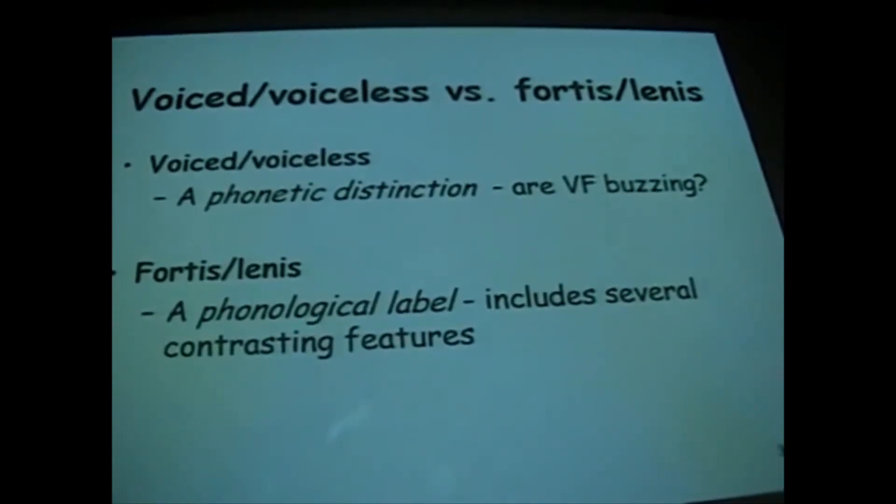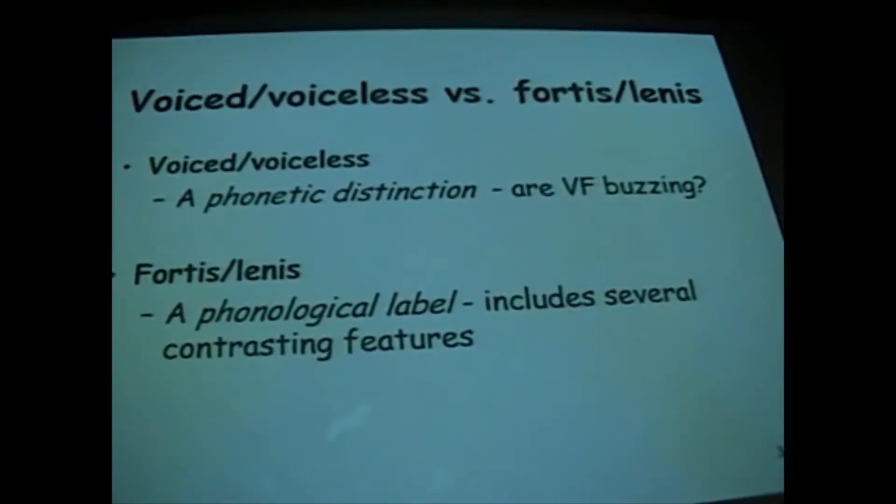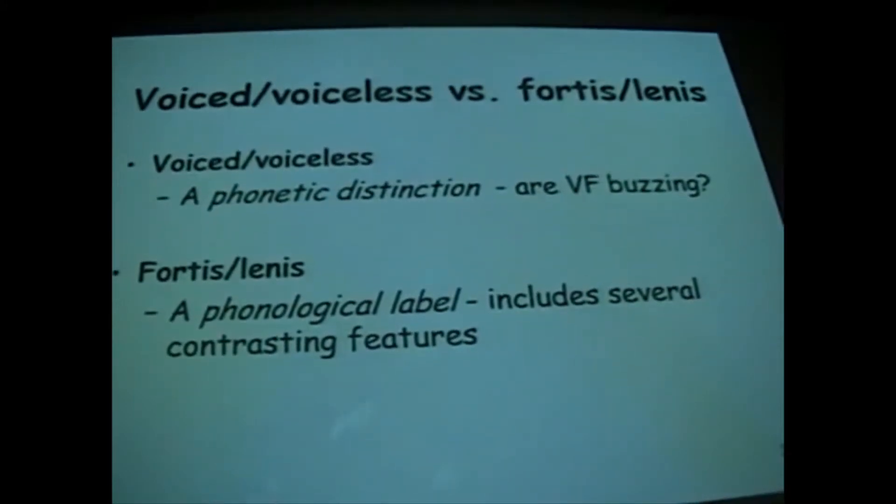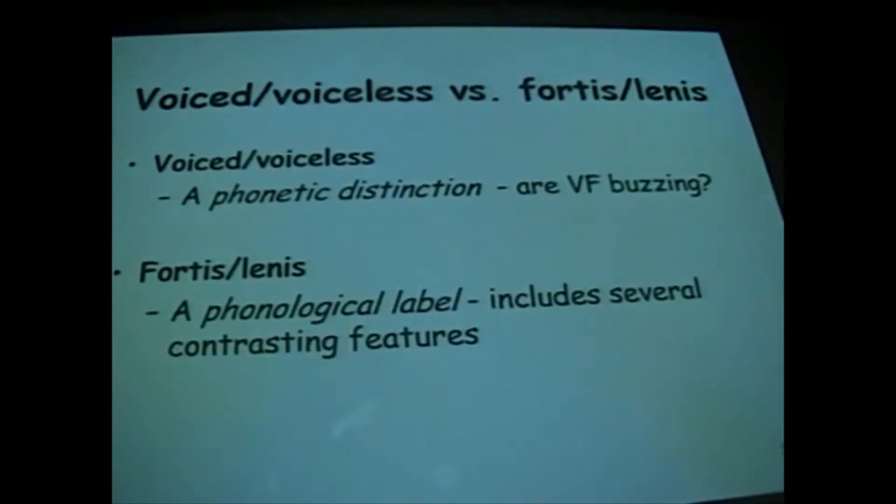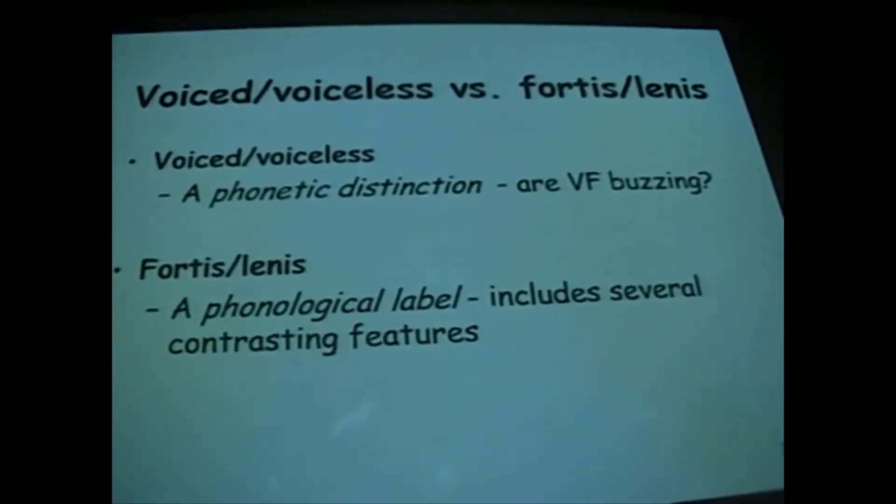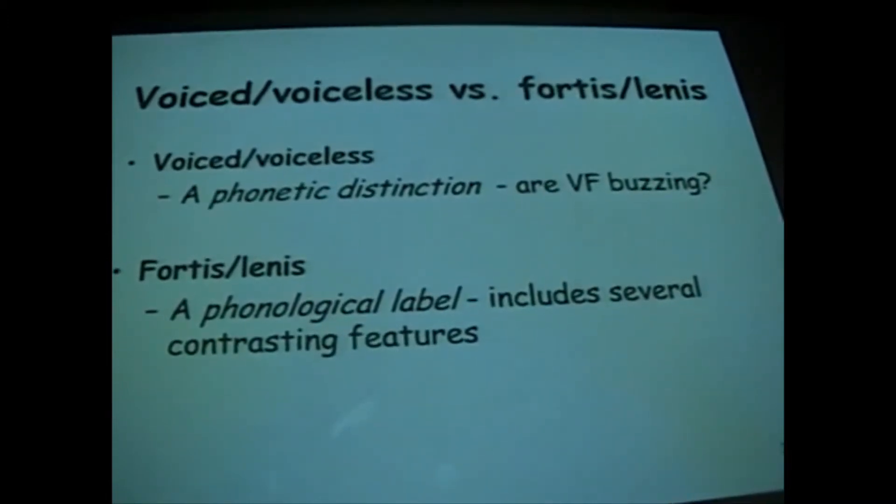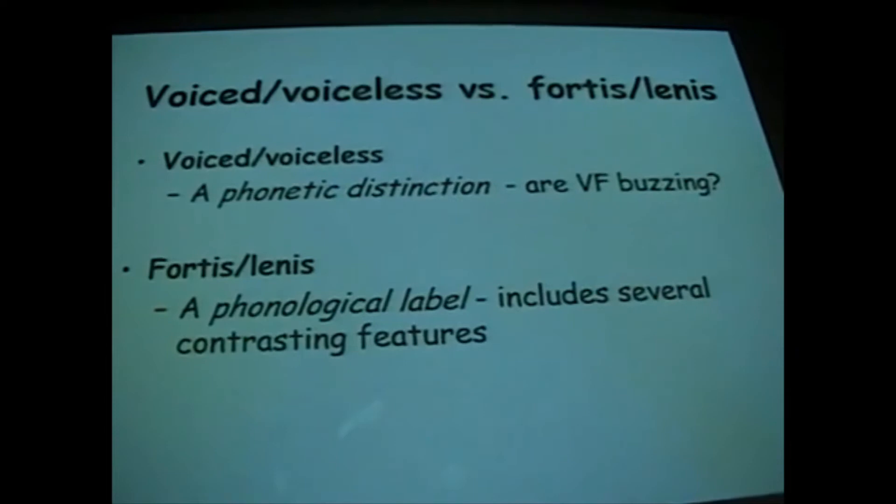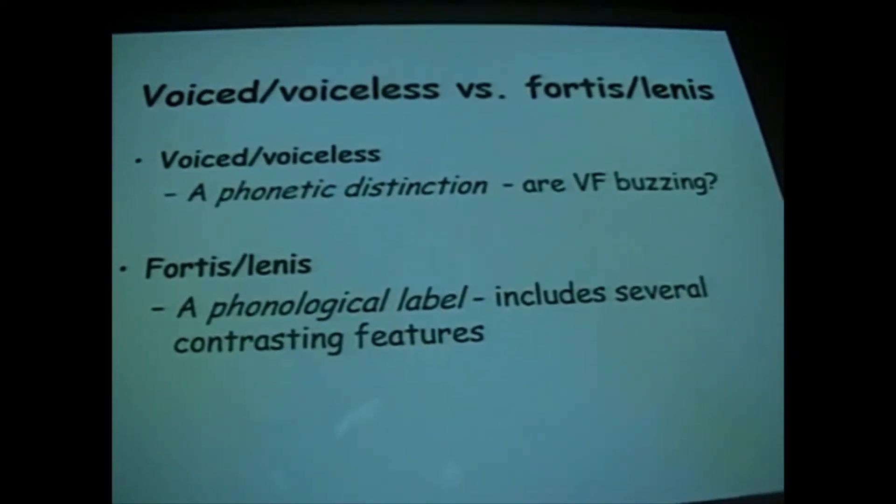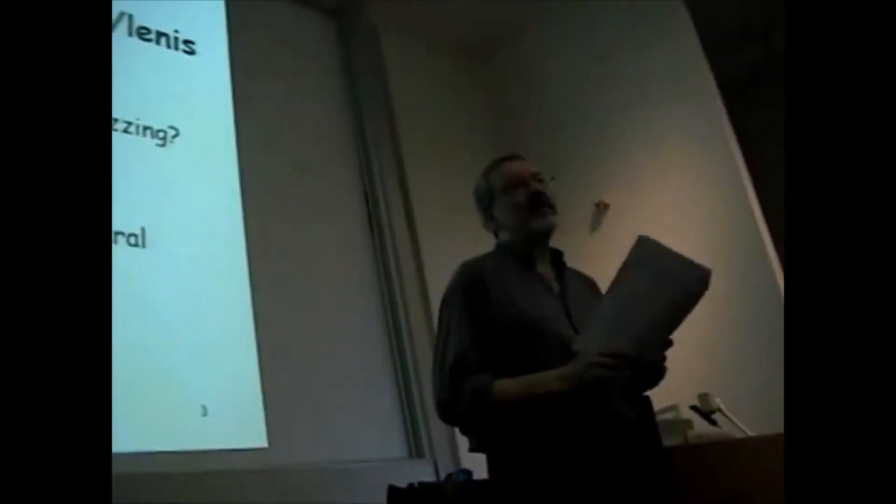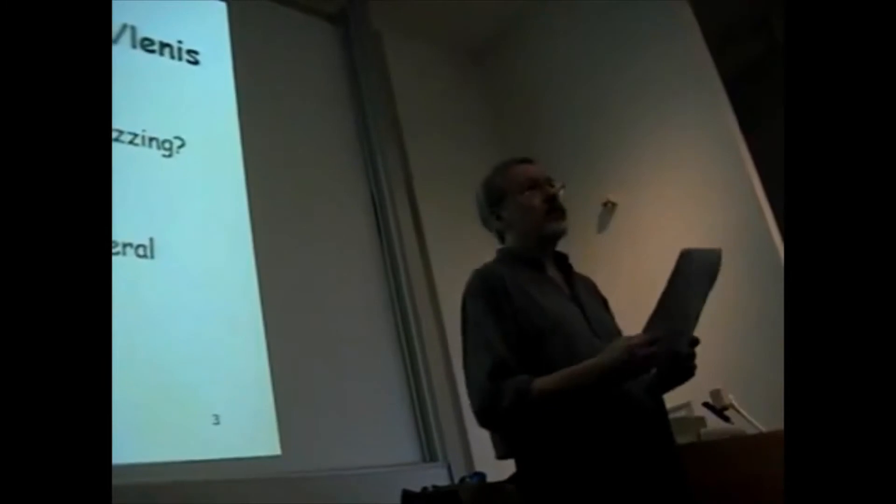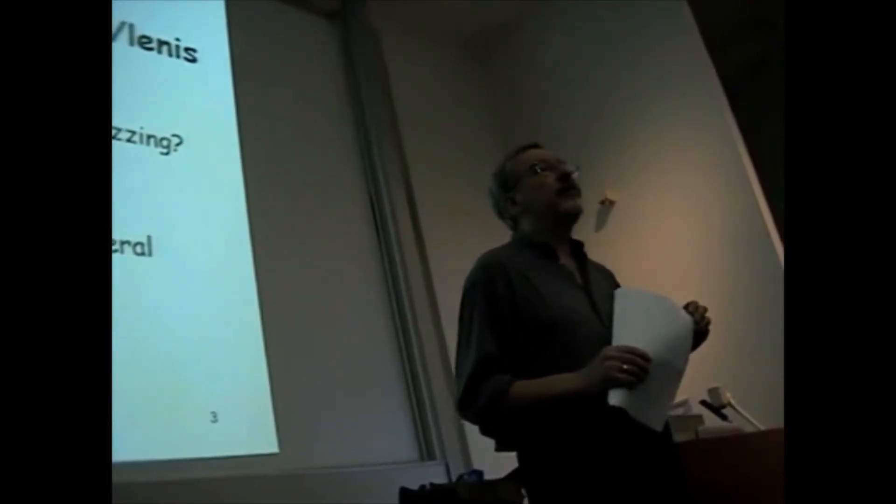Vowels before lenis consonants have full length. So this gives us beat versus bead. Say beat. Short vowel, and then bead. And the vowel lengthens. Only before the fortis is it clipped. Syllable final stops often have a reinforcing glottal stop. We call that effect pre-glottalization. So if I say she bit me, I'm referring to a cat not my wife, then I have that reinforcing glottal stop on the tip. Bid me something, then I don't have any glottal stop.